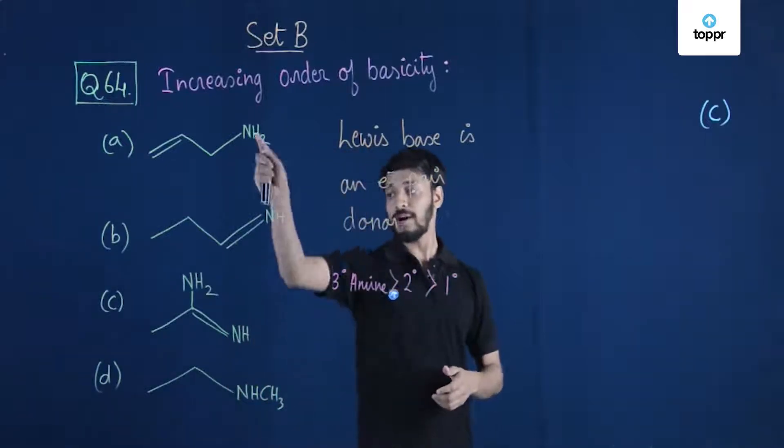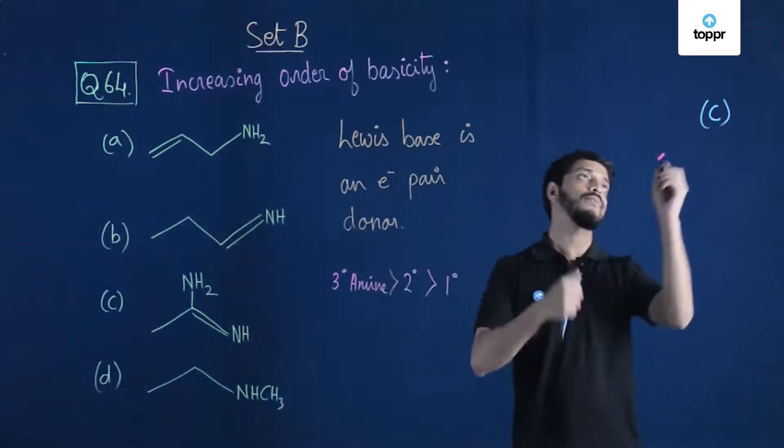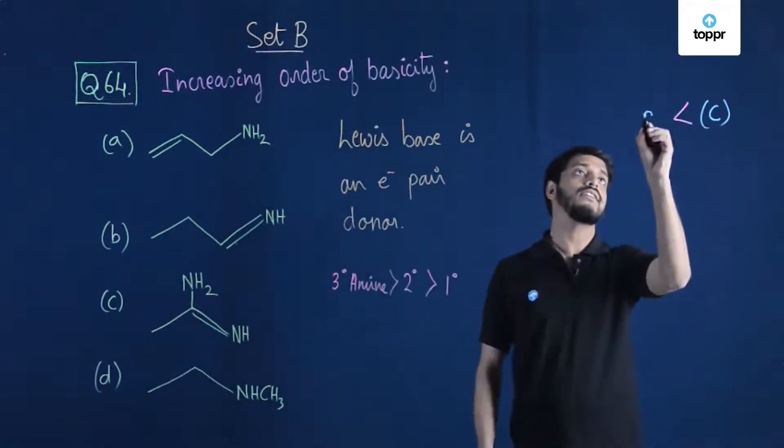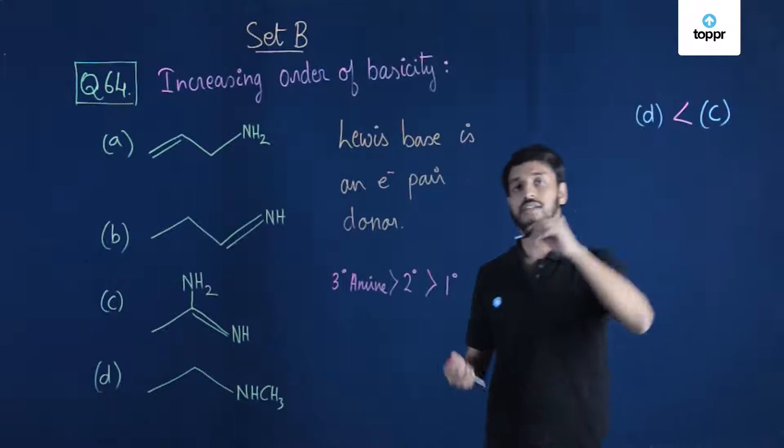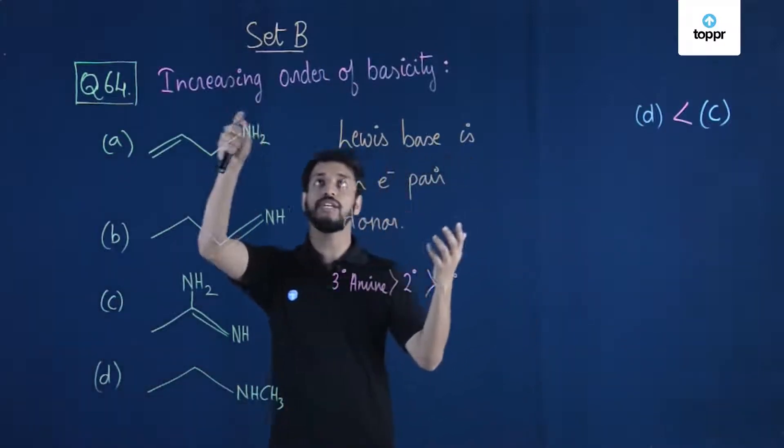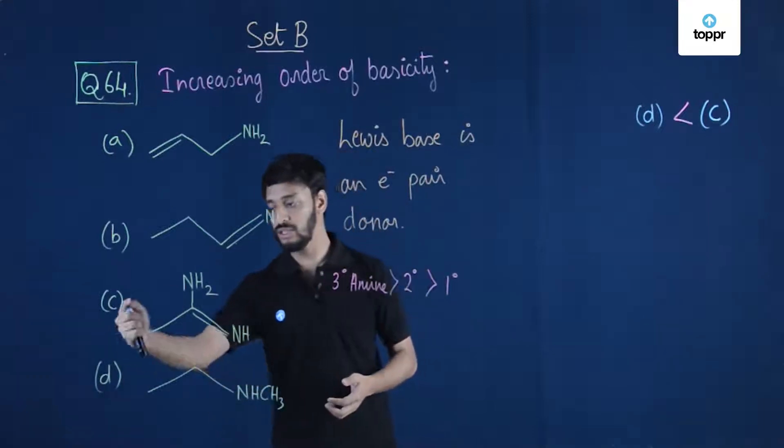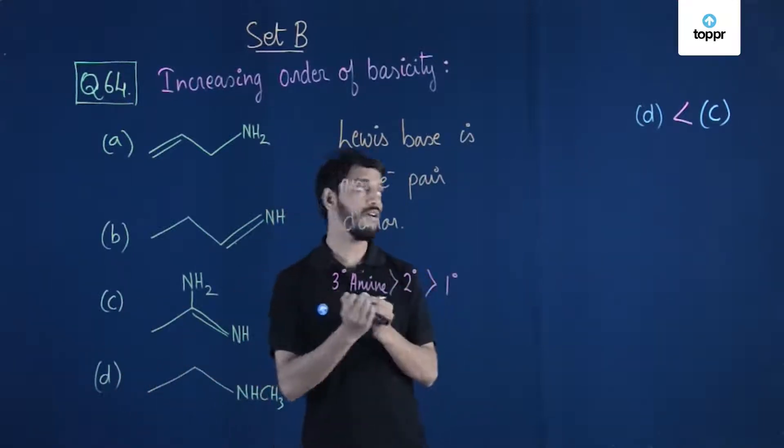So among these three, what we get is that option D has the next probability of being a basic compound. Right? So we have talked about these two, C and D, we got this. Now what's next?